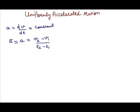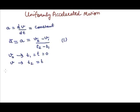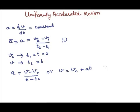Here, v1 is the initial velocity at time t1 and v2 is the final velocity at time t2. Let v0 be the velocity of the particle at initial time t1 = t = 0, and v be the velocity at time t2 = t. Substituting into equation 1, we get: acceleration a = (v - v0) / (t - 0), which gives us equation 2: v = v0 + at.